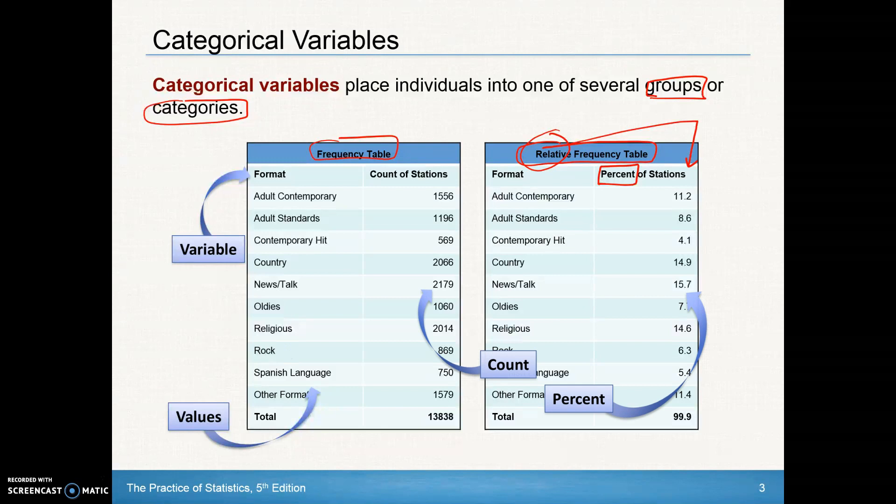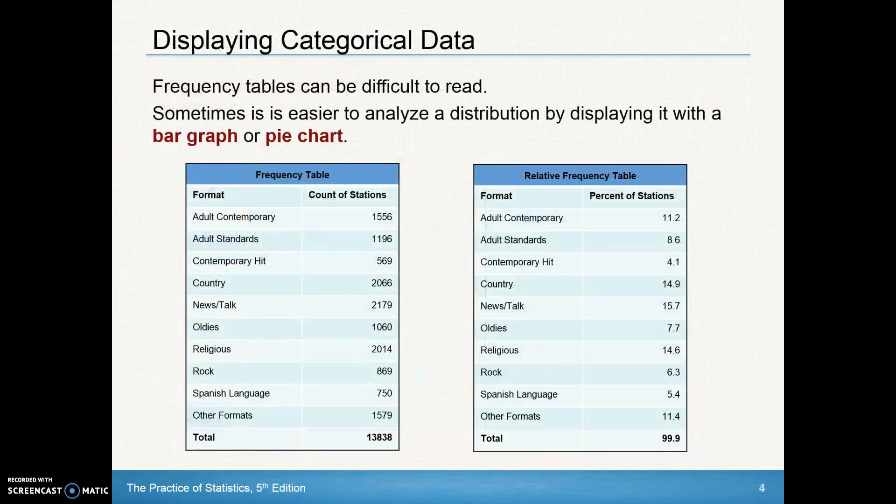In a frequency table, we have counts. In a relative frequency table, we have percentages. Each of those lends themselves to a better graphical display. A frequency table will probably be best displayed on a bar graph.